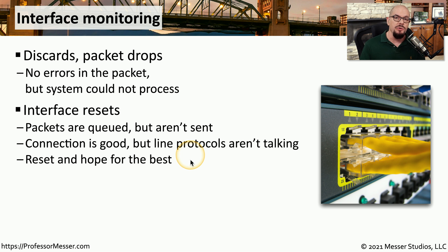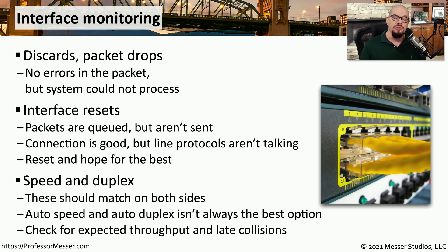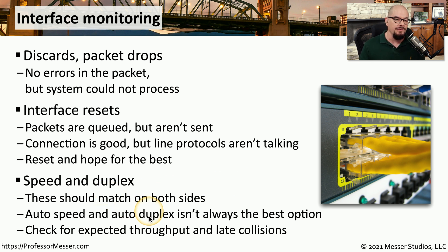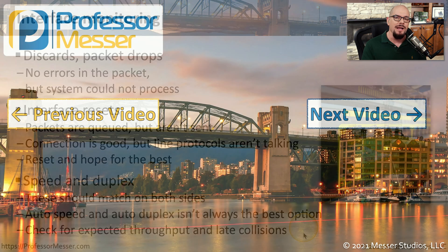In those situations, we would do the typical IT response: power off that interface, turn it back on, and hope that it has cleared itself and can now work properly. We also want to be sure that we've configured interfaces properly for the correct speed and duplex. We can look at the speed and duplex statistics on one end of the link and compare them to the settings on the other end to make sure both match. In certain situations, one end of the cable may be configured for full duplex while the other end auto-negotiates to half duplex. When that occurs, you'll see errors such as lower throughput and late collisions, indicating that the speed and duplex configuration may not be matching on both sides.